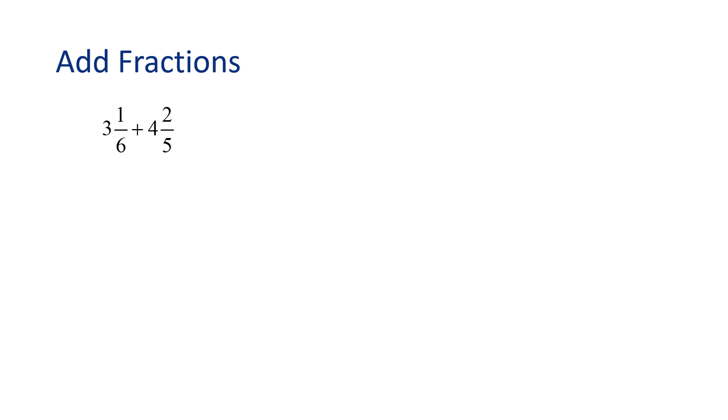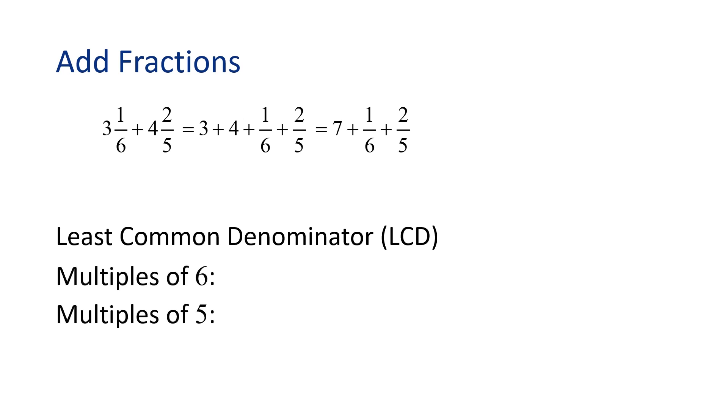Can you help me with another problem? What is 3 and 1 6th plus 4 and 2 5ths? Remember, we can add the whole number parts together and then the fractional parts. 3 plus 4 plus 1 6th plus 2 5ths equals 7 plus 1 6th plus 2 5ths. In order to add the fractional parts, we will need the least common denominator, or LCD, and we do that by finding the multiples of 6 and 5.